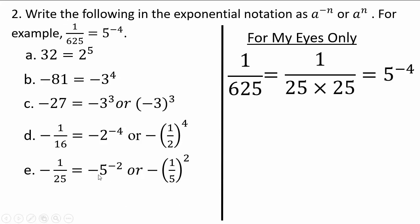Remember: the negative sign makes a number negative or positive depending on the term. But the negative exponent makes it a fraction base — if it's a fraction base, it becomes a numerator base. That's the biggest difference: the negative in front moves the quantity left or right of 0, whereas the negative exponent moves it above or below in terms of numerator-denominator placement.